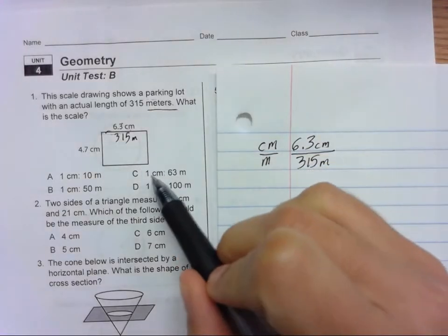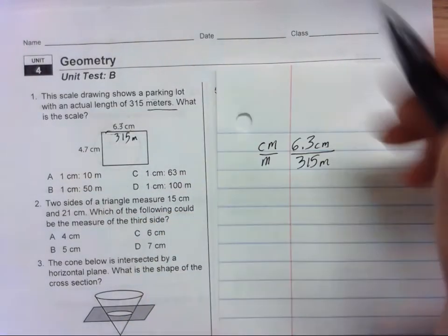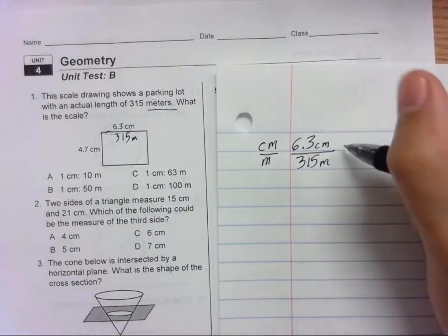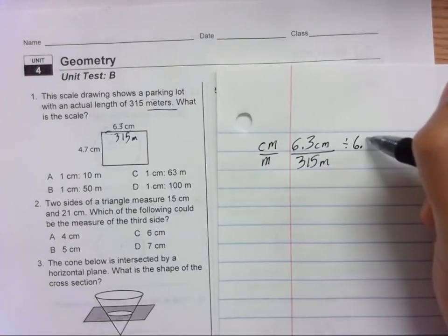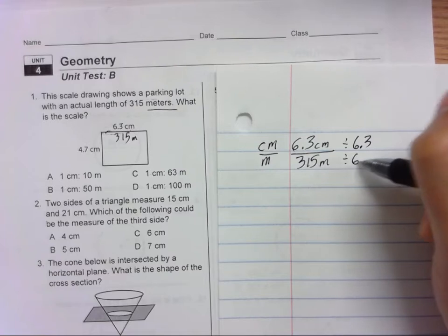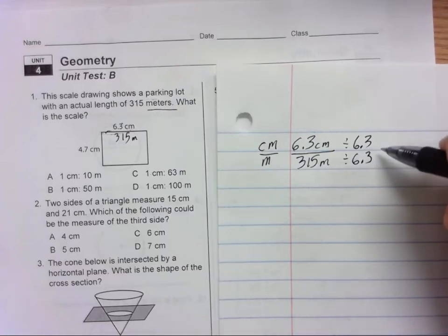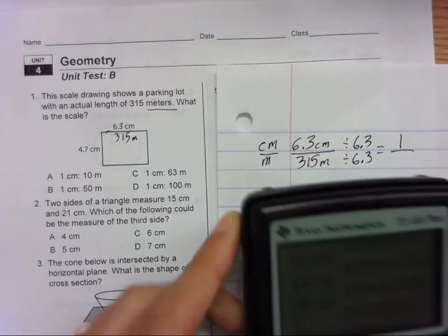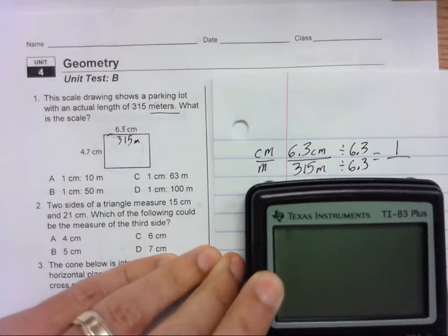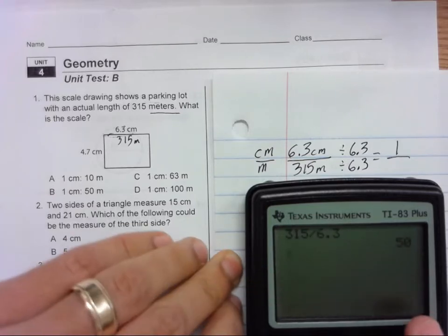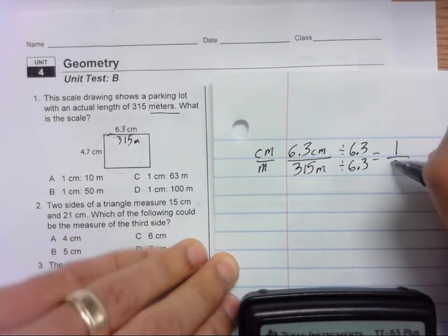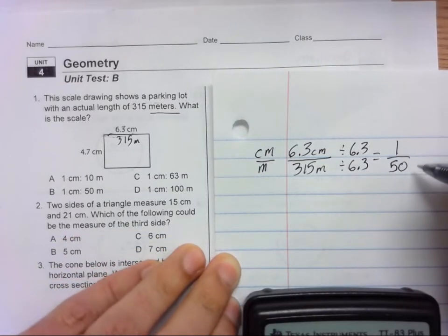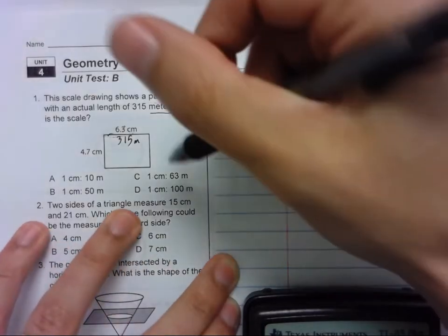We see that all of our answer options have 1 centimeter, so how do we get this to 1? Well, we have to divide by 6.3. If we do it at the top, we have to do it to the bottom. And so we get 1 centimeter is... Then you simply divide 315 divided by 6.3 and you get 50. So 1 centimeter is equal to 50 meters. The answer in number 1 is B.